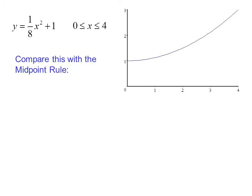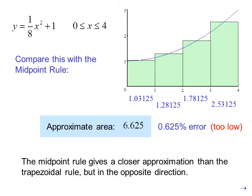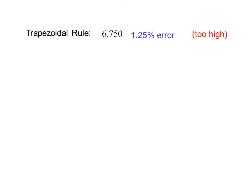Compare this with the midpoint rule. If we calculate the area using rectangles that touch at the midpoint, we get an approximate area of 6.625, which is a 0.625% error — too low. The midpoint rule gives us a closer approximation than the trapezoidal rule, but in the opposite direction. The trapezoidal rule gives us 6.750, or a 1.25% error, which was too high.